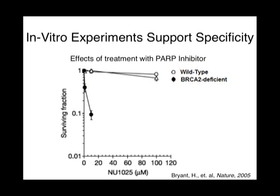Researchers are able to quantitatively illustrate PARP inhibitors' specificity to BRCA1-2-deficient cells. An experiment was conducted in the Helliday lab, where BRCA2-deficient cells and normal cells were treated with NU1025, a PARP inhibitor. In this graph, the solid black line represents BRCA2-deficient cells, and the black line with white circles represents normal cells. The addition of a PARP inhibitor causes a drastic decrease in cell survival, up to 90% cell death in BRCA2-deficient cells, while the normal cells remain unaffected, proving that PARP inhibitors are effective in vitro.